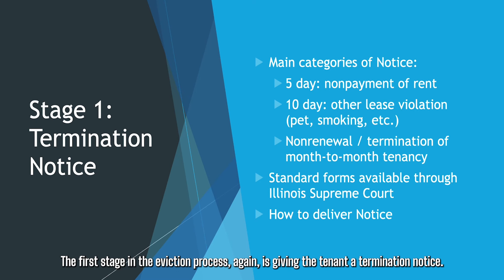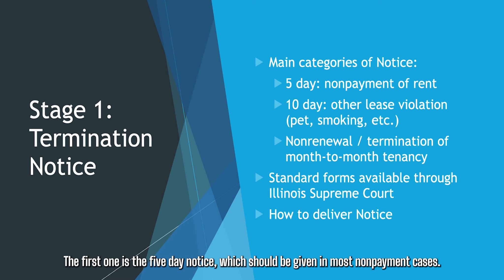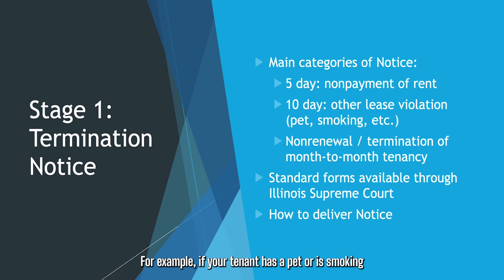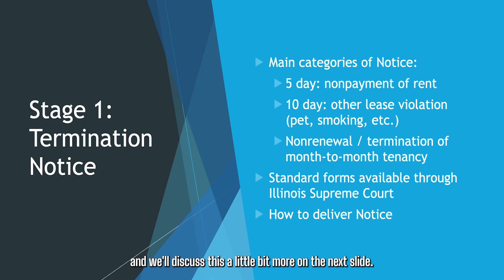The first stage in the eviction process is giving the tenant a termination notice. There are three main categories of termination notices. The first is the five-day notice, which should be given in most non-payment cases. The second type is a 10-day notice if there's a different type of lease violation, for example if your tenant has a pet or is smoking in the unit when that's prohibited by the lease. The final type is for a non-renewal case, otherwise known as a no-cause eviction.